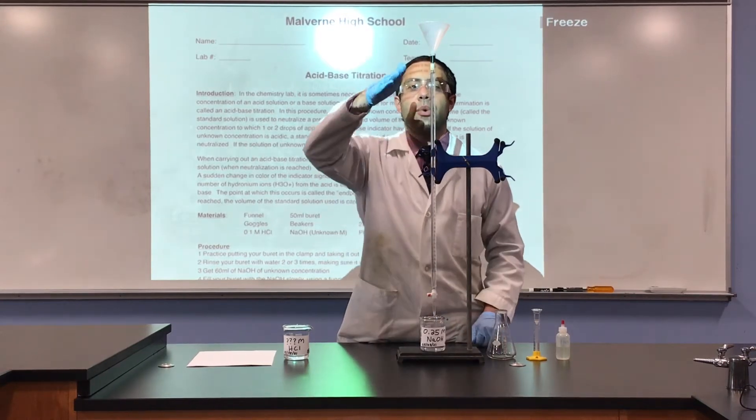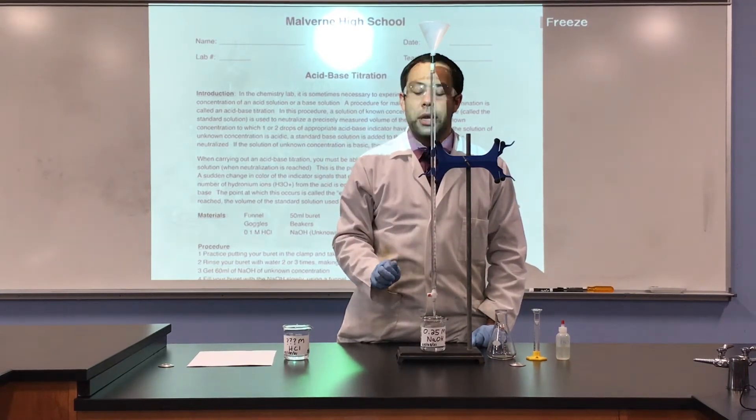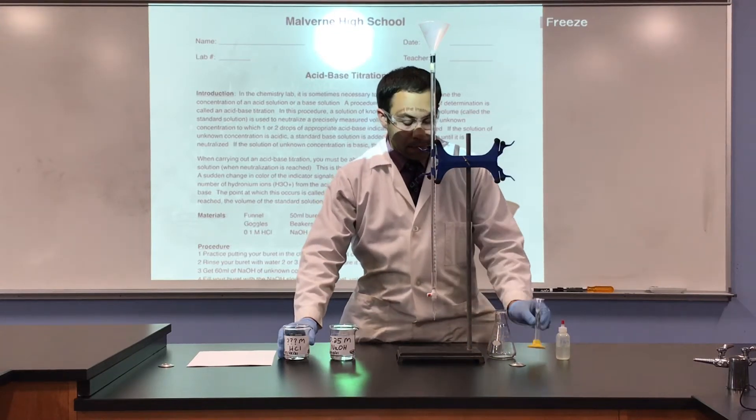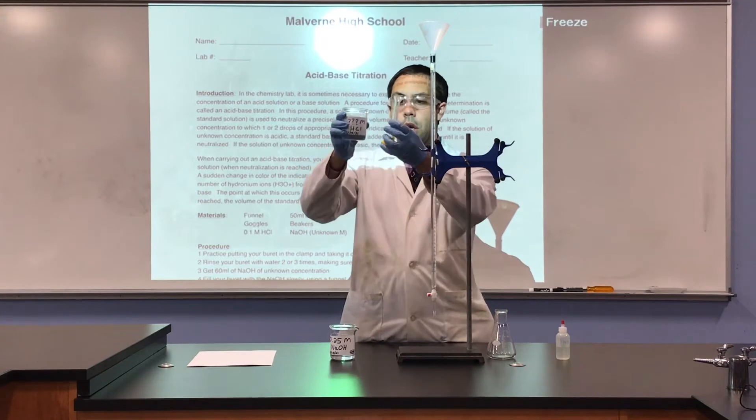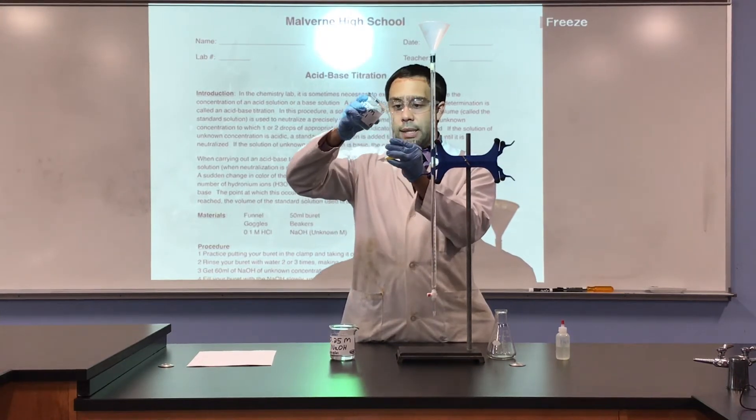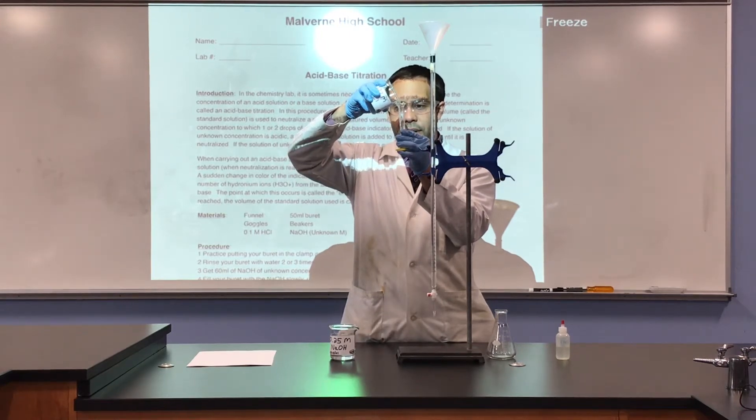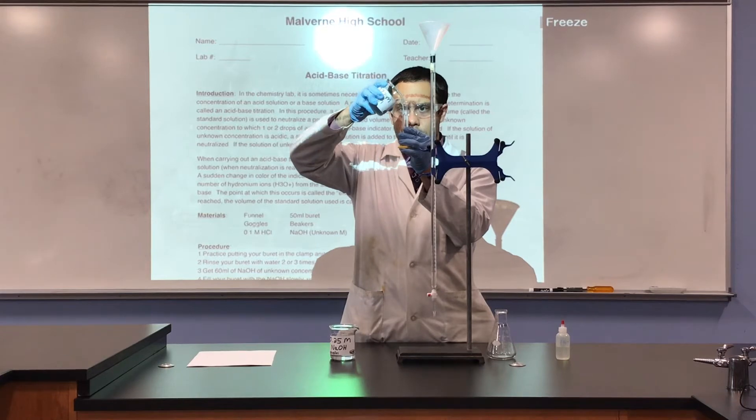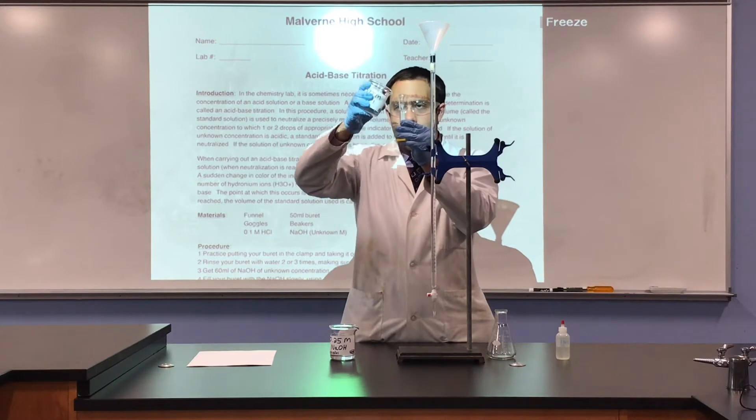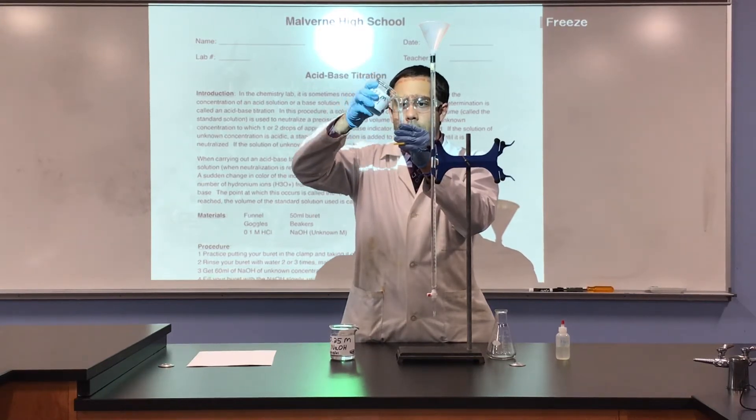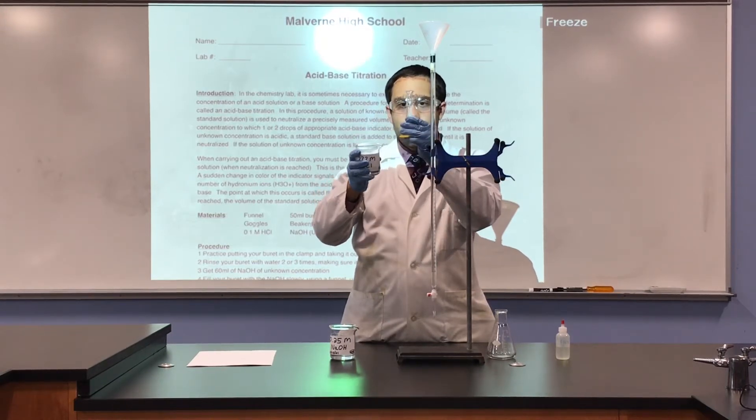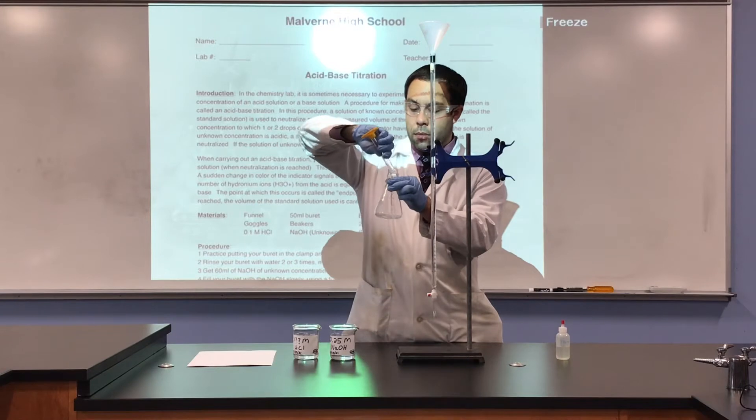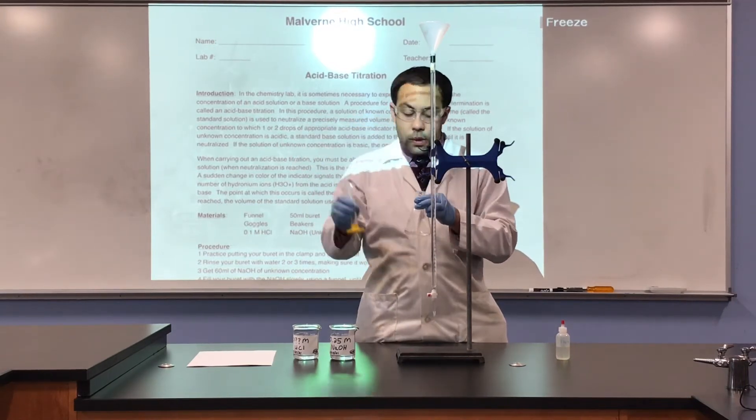Just like a graduated cylinder, you want the bottom of the meniscus on the zero milliliter mark. We can remove the base, set it aside, and now we'll worry about the acid. We are going to take 10 milliliters of acid. We take the graduated cylinder and raise the beaker and graduated cylinder to eye level so we get exactly 10 milliliters of acid. Once again, we want the bottom of the meniscus to touch the 10 milliliter mark. Perfect. 10 milliliters, we put it in our flask.